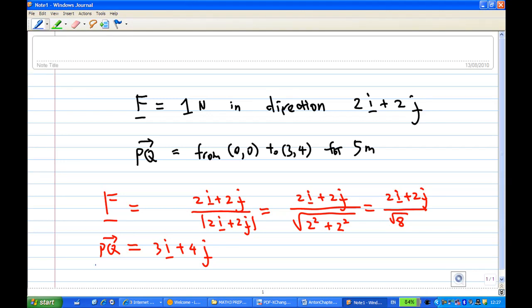So the work done in this case is F dot PQ. Alright, so this is 1 over square root of 8, times (2i plus 2j) dot (3i plus 4j).